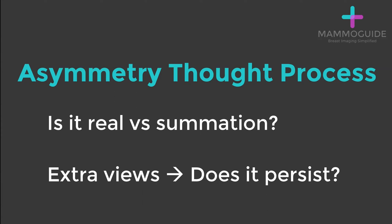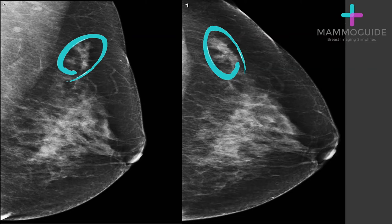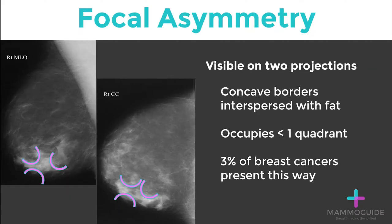The thought process when evaluating an asymmetry is: first, is it a real finding or just summation artifact? This can be sorted out with extra views — does the abnormality persist? Standard craniocaudal and medial lateral oblique views of the left breast show a focal asymmetry in the upper outer left breast.